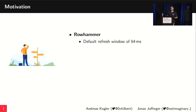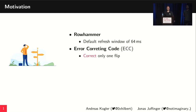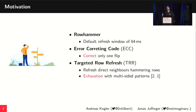Since we have known about this bug for a long time, we actually have defenses in place by now. The most commonly known is error correcting codes, ECC, which can detect and correct one bit flip per data word. We also have a more dedicated Rowhammer defense called targeted row refresh (TRR), which refreshes neighboring rows before the electrical disturbances can be abused.